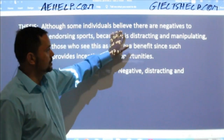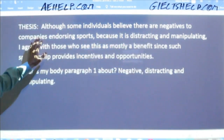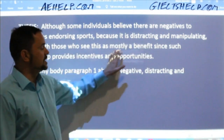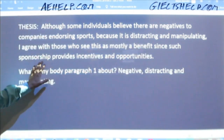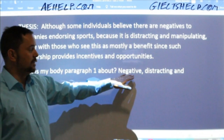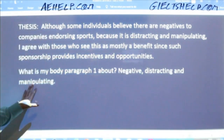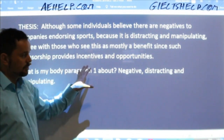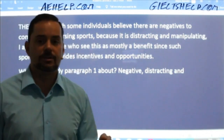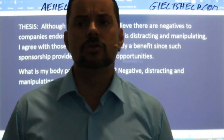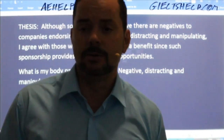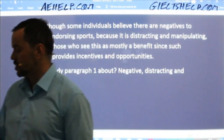If your essay has a weak indirect thesis like 'we'll talk about the advantages and disadvantages of sports advertising,' that's a weak thesis, and your whole essay will be weak even if you write fairly well. You need a strong spine — a strong backbone — and that's your thesis. Although some individuals believe there are negatives to companies endorsing sports because it is distracting and manipulating, I agree with those who see this as mostly a benefit since such sponsorship provides incentives and opportunities. The reader knows that body paragraph one is going to cover the negative. We always write the first body paragraph about the side we do not agree with.